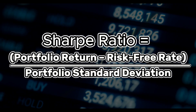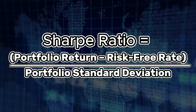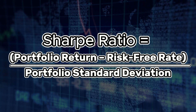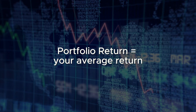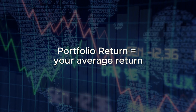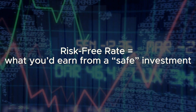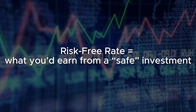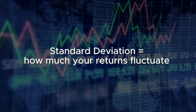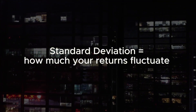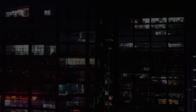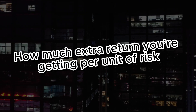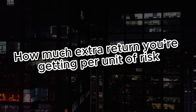Here is the basic formula. The Sharpe Ratio is the portfolio return minus the risk-free rate, divided by the portfolio standard deviation. The portfolio return is your average return over the years. The risk-free rate is what you'd earn from a safe investment, like for example the US treasury bills. And the standard deviation is how much your returns fluctuate — in other words, how bumpy the ride is. The result is that you can see how much extra return you're getting per unit of risk.